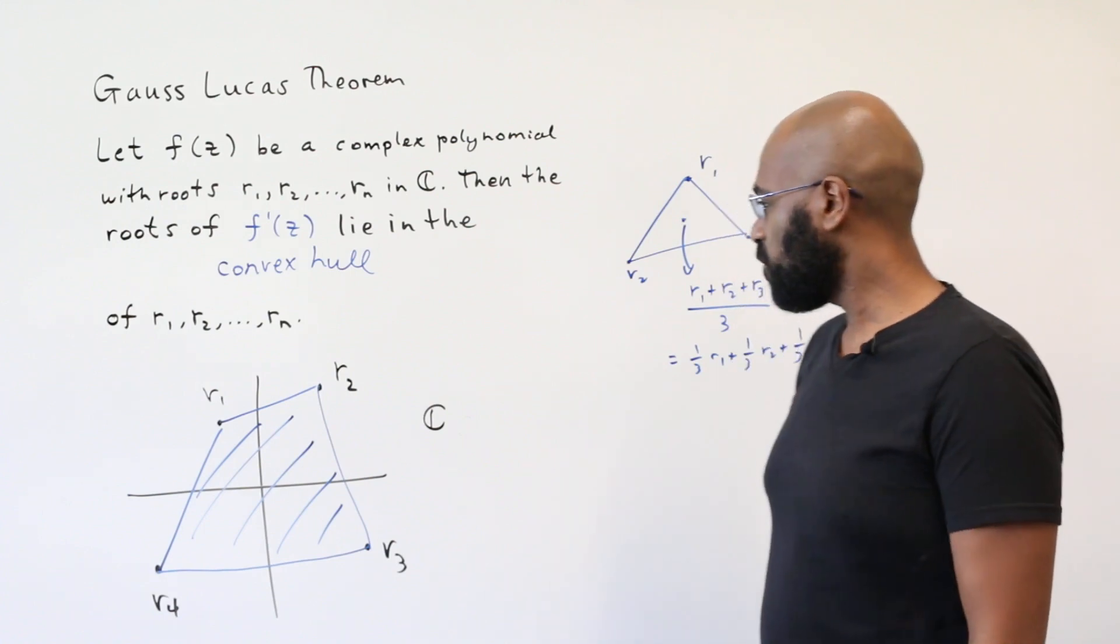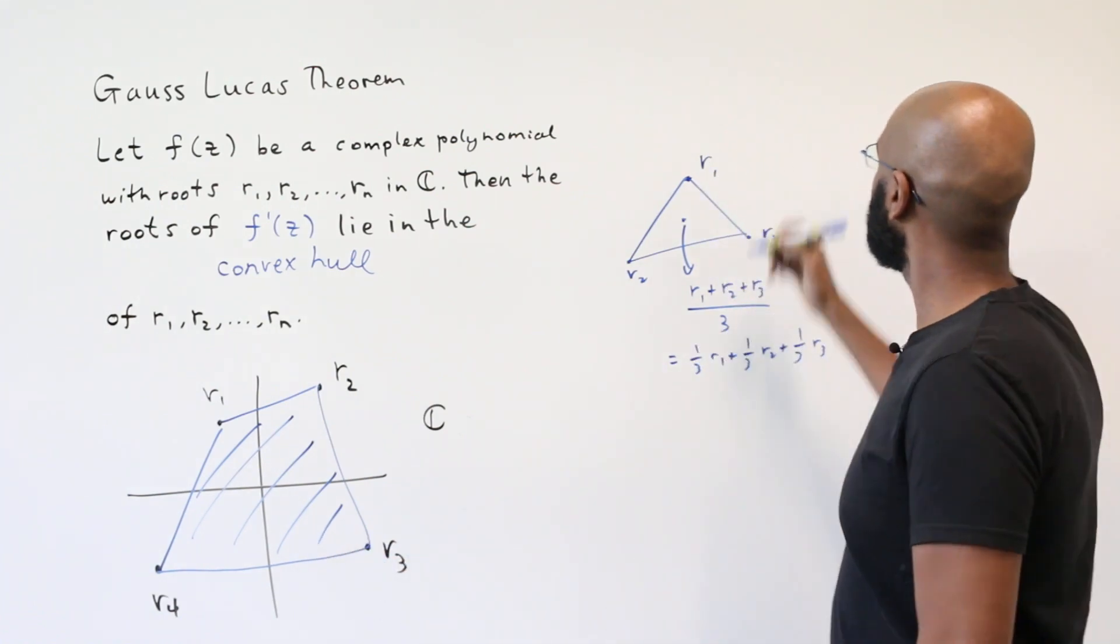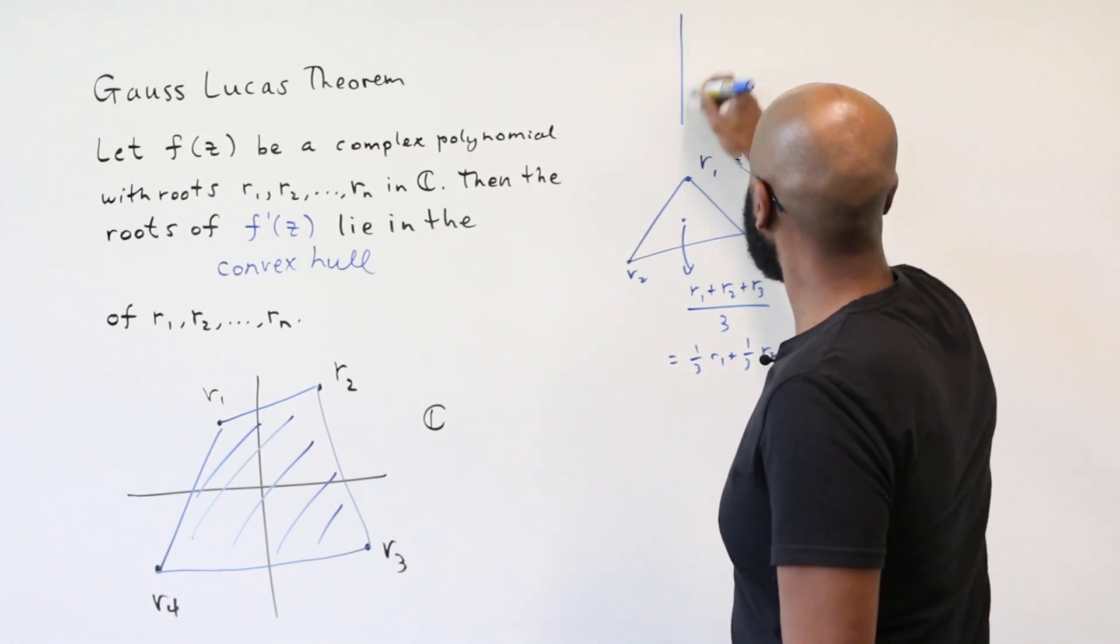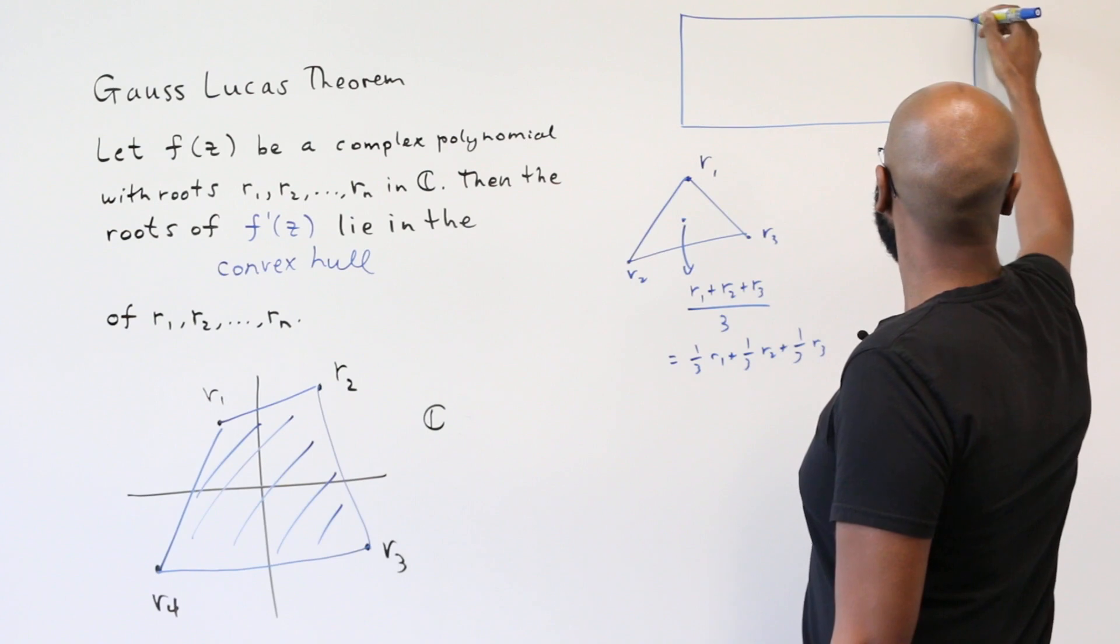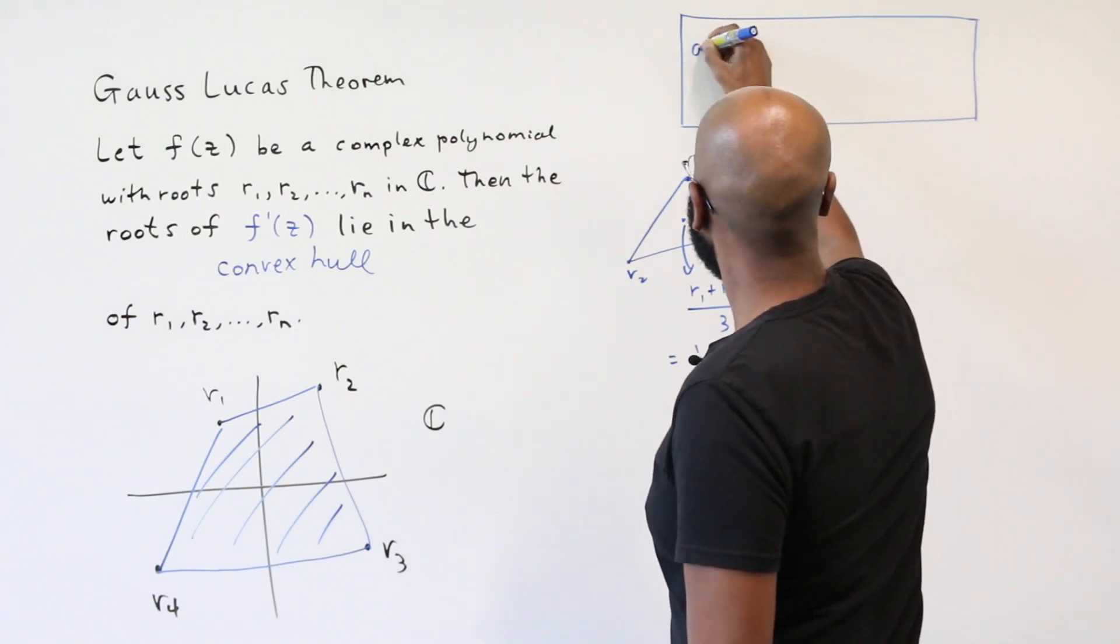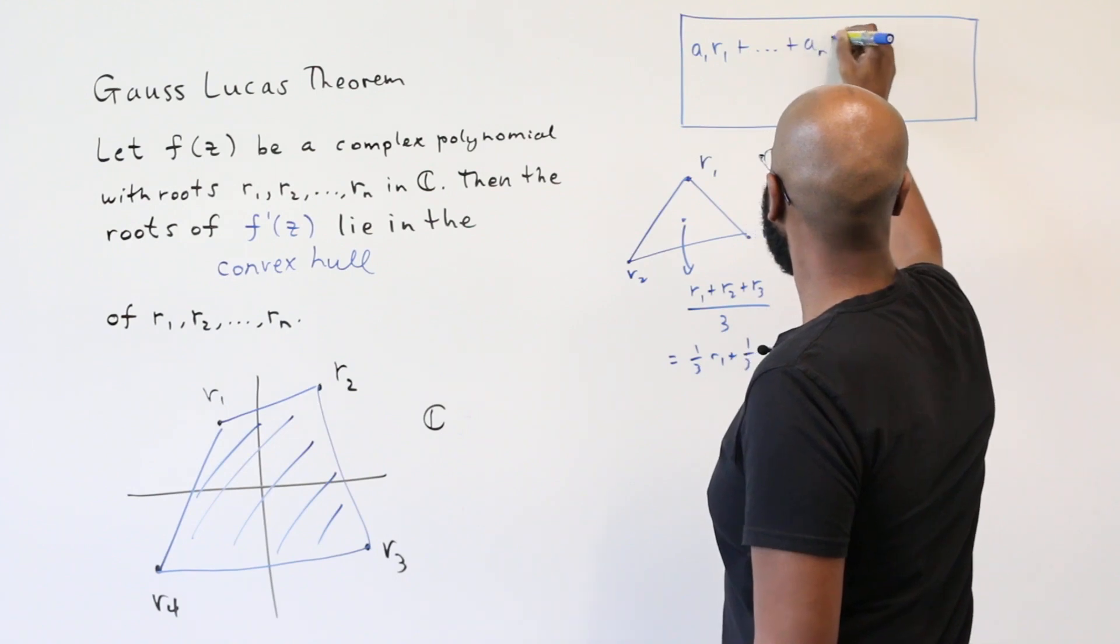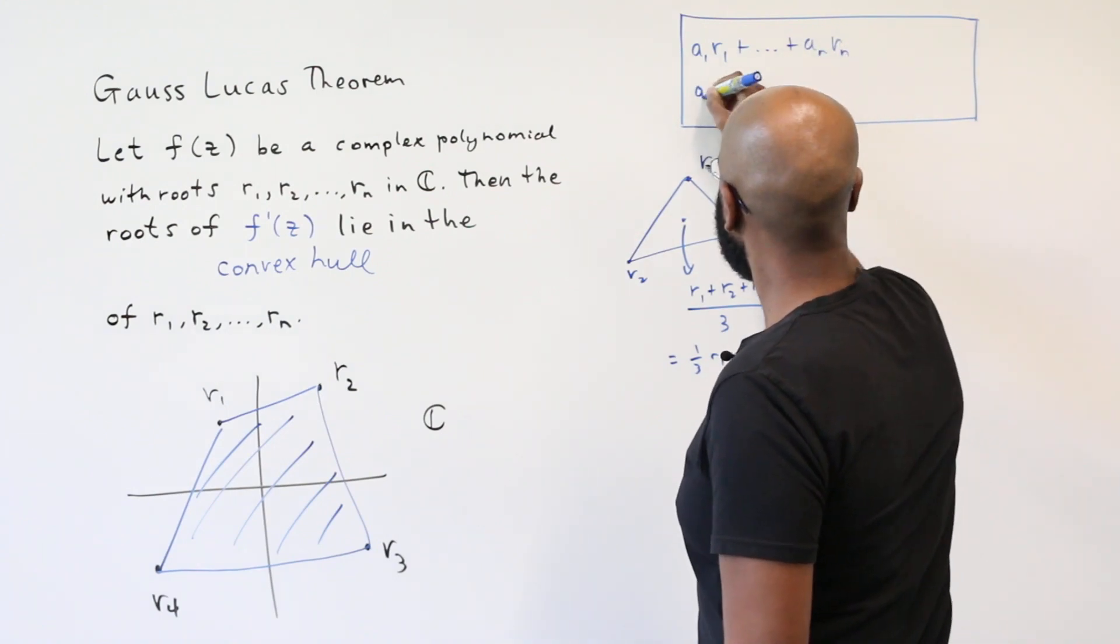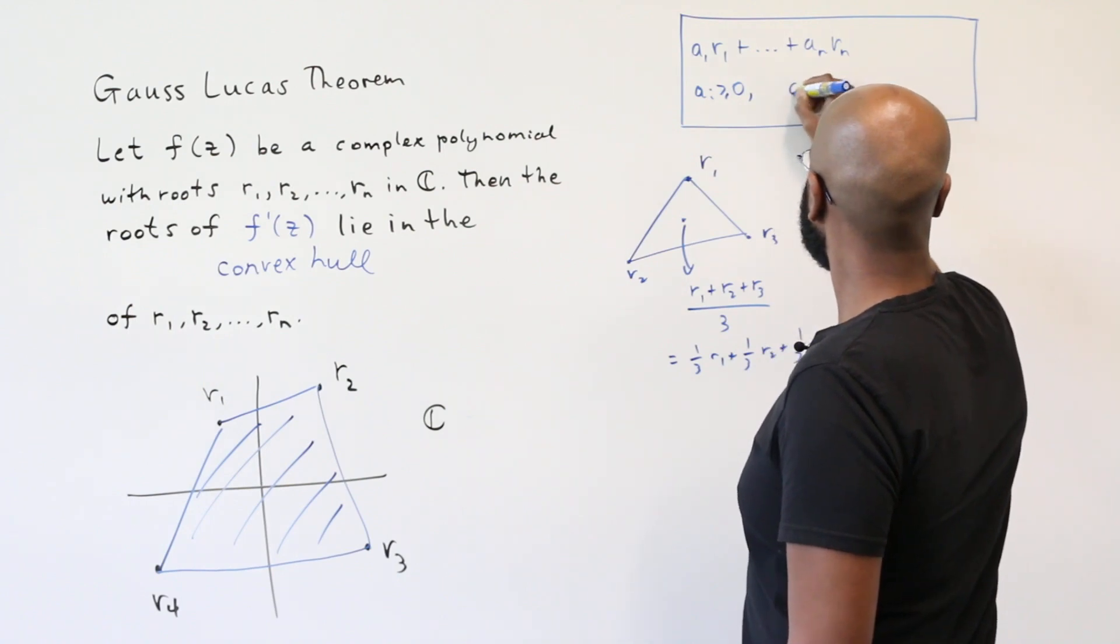So in general, if you want to describe a point in the convex hull of a whole bunch of points, and I'll put this in a box here so that we can use it in our proof, points in the convex hull look like a1r1 plus up to anrn, where these ai's are all non-negative and sum to one.